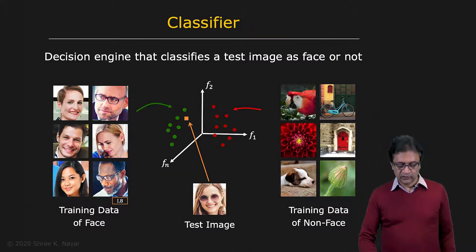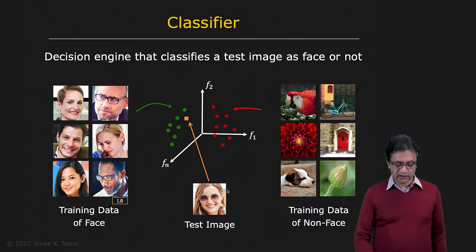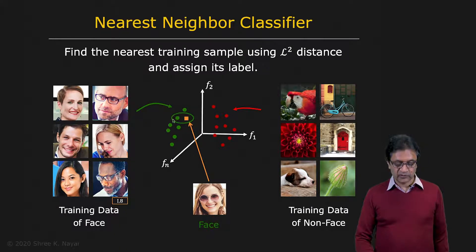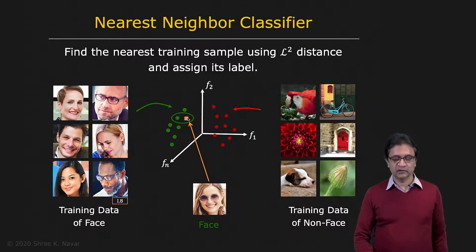If you are given this image right here — it's clearly a face — you compute the feature vector, which is a point in this space. The question you can ask is: what is the closest neighbor to this point? You find the closest neighbor, take its class, and simply assign it to this point. And you say, yes, it is a face.